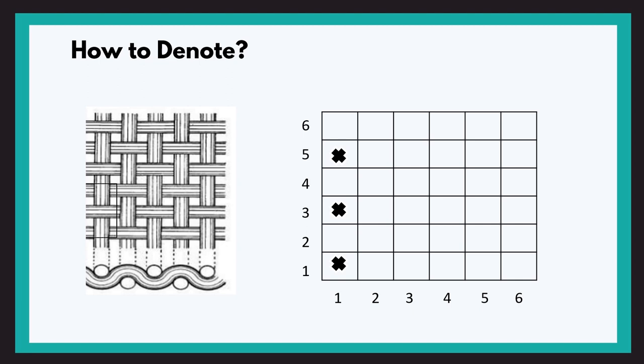Now for the second warp: it moves below the first weft so we leave a blank, then passes over the weft so we mark a cross, then blank, cross, blank, cross. This was the movement for the second warp. To summarize: you mark a cross wherever the warp is up, and leave a blank wherever the weft is up.